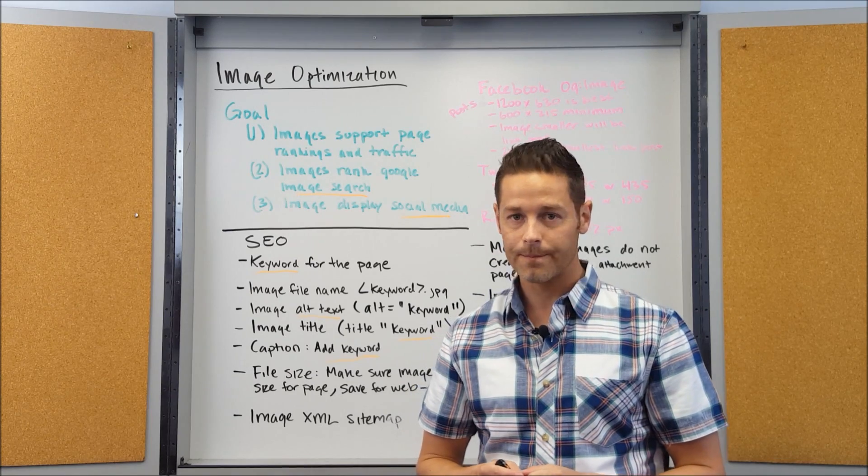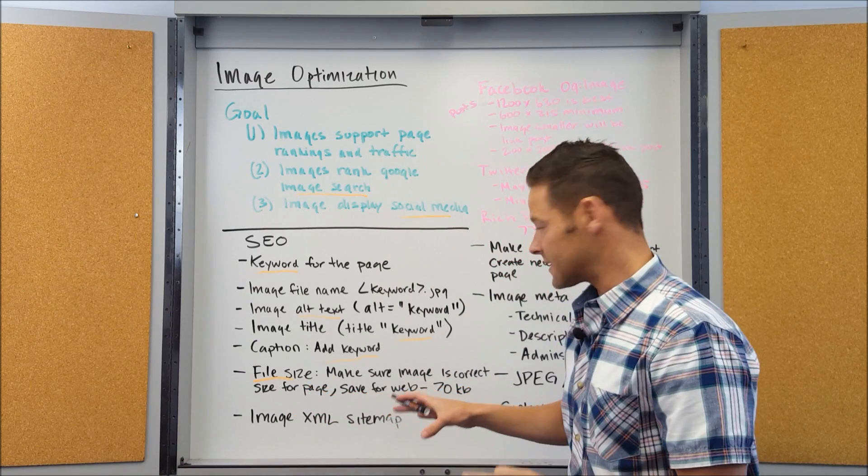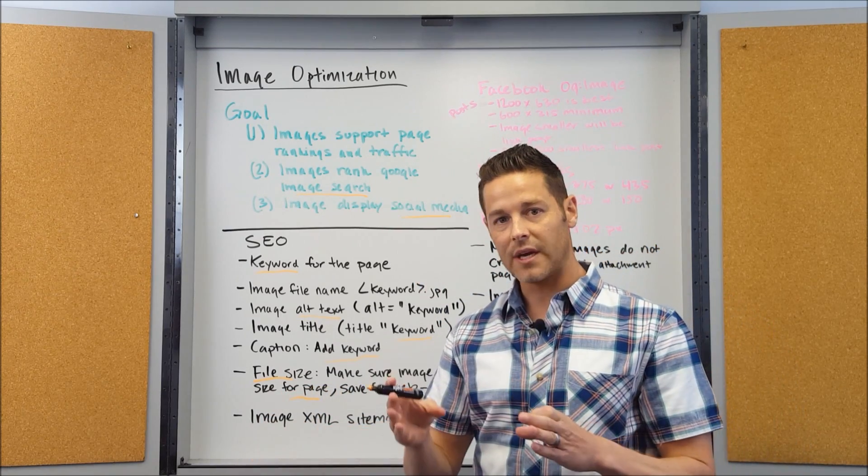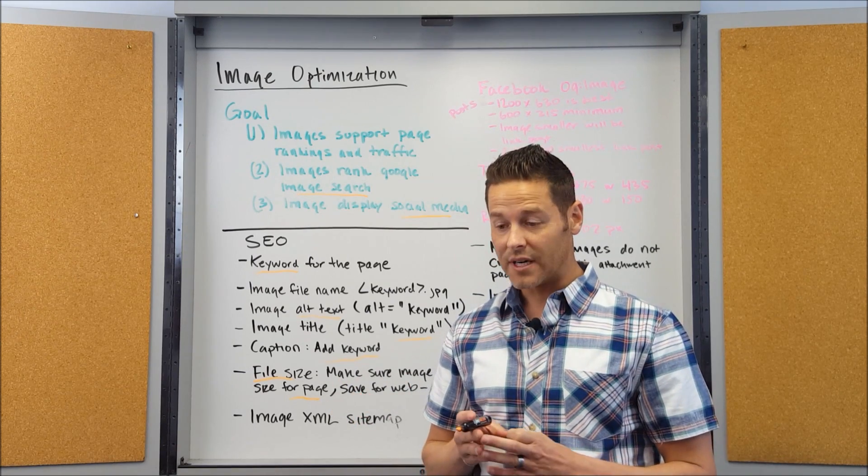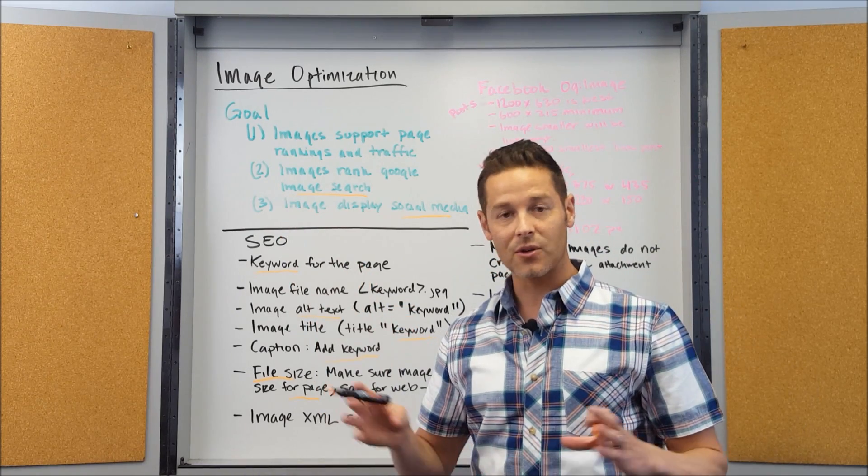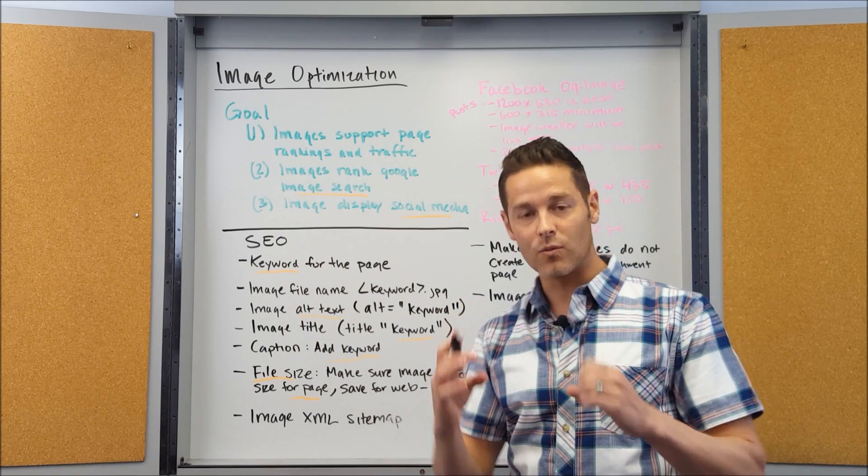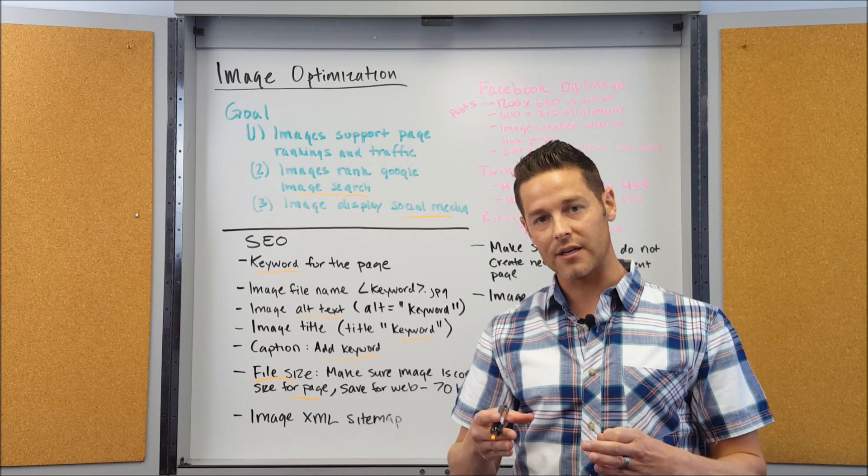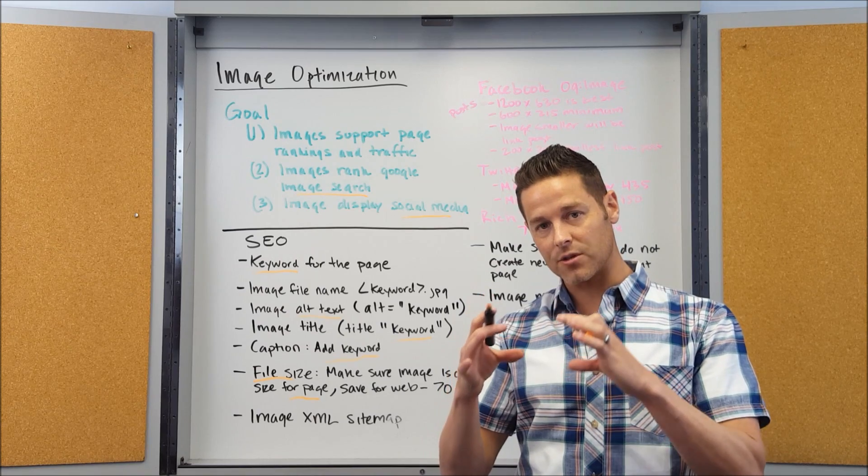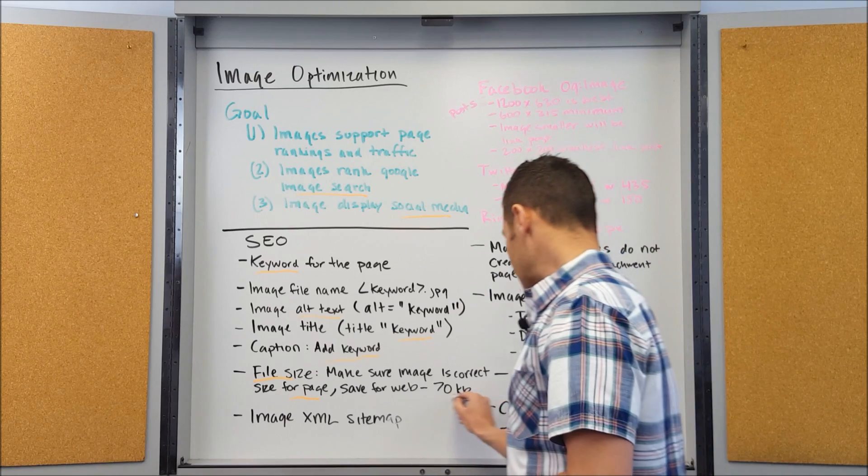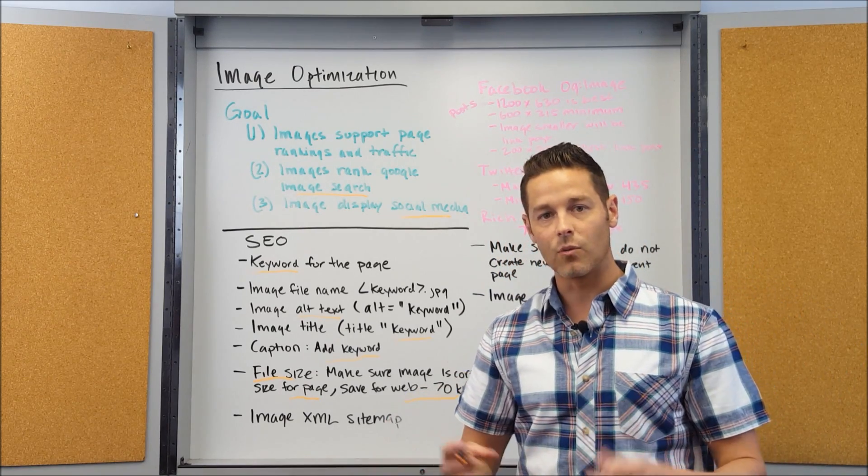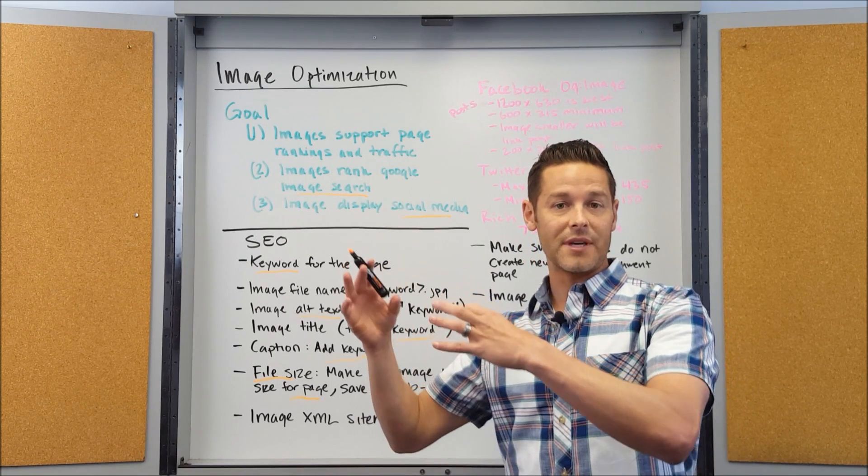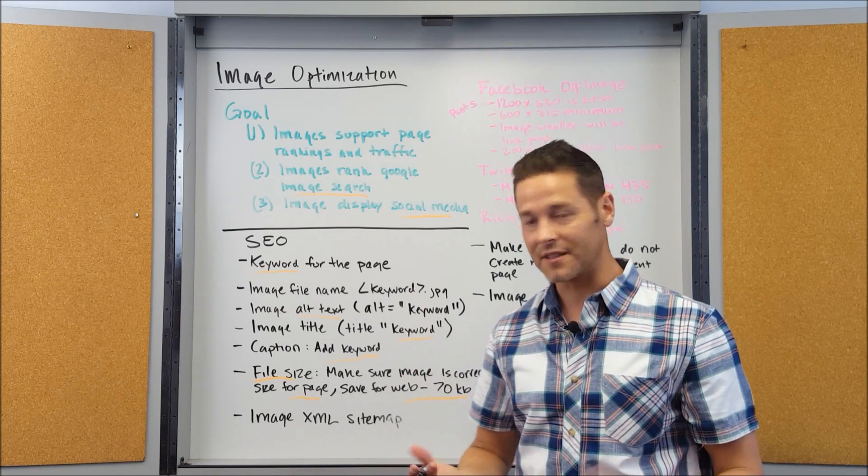There's image optimization from a technical perspective. Make sure your image is the correct size for the page. If you have an image and on the page it only needs to be 600 pixels wide by 300 pixels tall, but when you upload it it's 2000 by some other huge number, then that has to be resized when the page is loaded and that makes the page really slow. Make sure when you upload your images they're the correct file size and pixel width for the page exactly what you're going to be using. Also, save your images for web. If you're in Photoshop or one of these tools, save them for web. That's going to reduce the file size so it's more web friendly. Both of these things will increase your page speed.